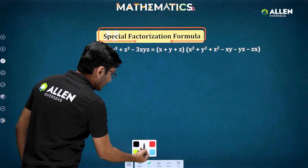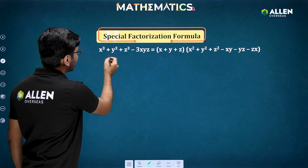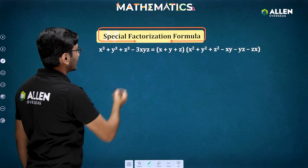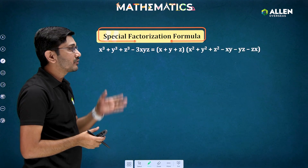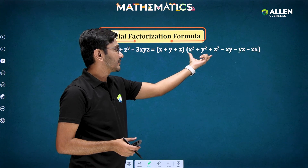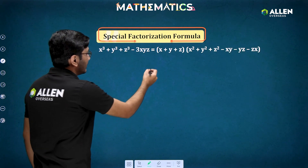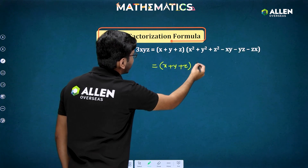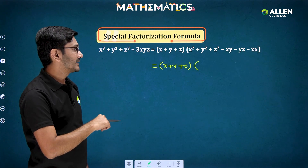Let's see the further details of this formula. Whenever we have the sum of the cubes of three numbers minus three times the product of those three numbers, we can always factorize it. One factor is the sum of all three numbers, and the second factor is the sum of the squares minus the pairwise products: x² + y² + z² − xy − yz − zx.